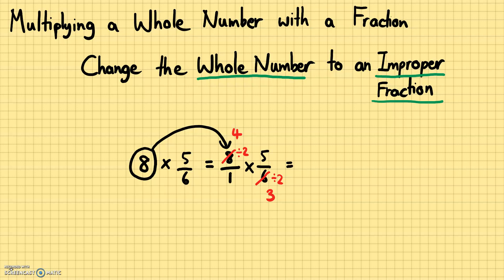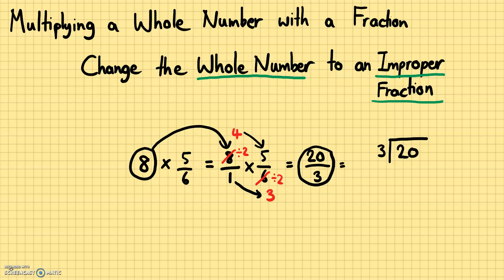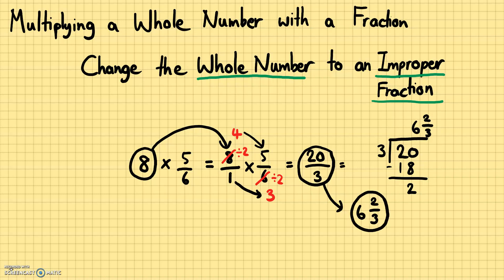Then just multiply across: 4 times 5 gives us 20, and 1 times 3 gives us 3. So we got an improper fraction, 20 over 3, as our answer. We can change that to a mixed number: 3 goes into 20 six times, giving us 18, with a remainder of 2. So we have the mixed number 6 and 2 thirds. That would be our answer when we multiply 8 times 5 sixths.